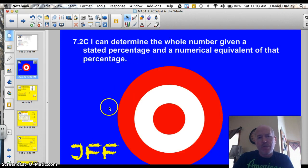Officially our target tonight is 7.2c. I can determine the whole number given a stated percentage and a numerical equivalent of that percentage. Let's do this thing.